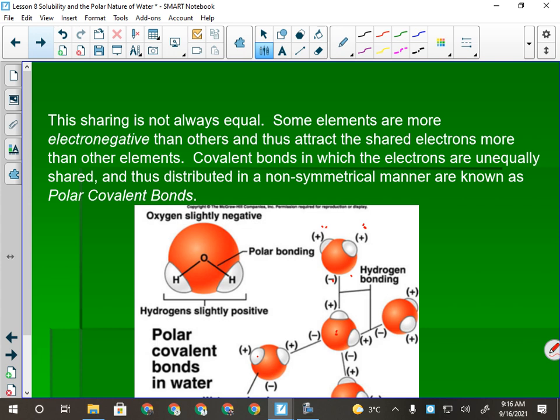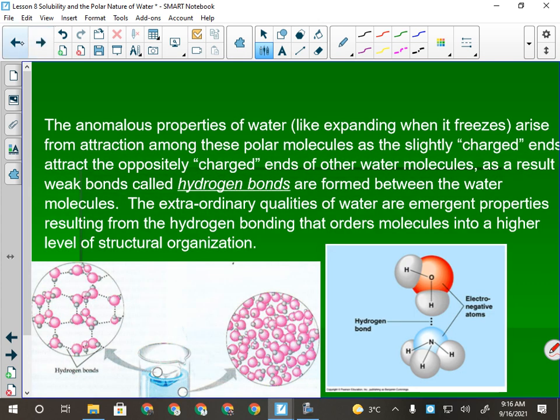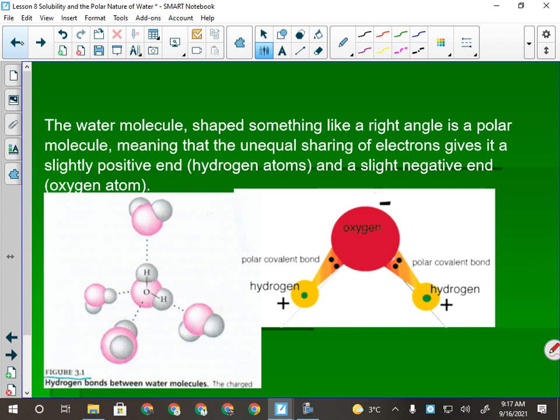Anytime you have electrons not being shared equally, you have a polar covalent bond. That's what there is between the hydrogen and the oxygen in a water molecule. Between water molecules, those are hydrogen bonds. So they're different. Polar covalent bonds, still really, really strong. Any type of covalent bond is really strong. The only difference is the polar ones, the electrons get distributed weirdly, and you end up with a positive pole and a negative pole to the molecule, which is why it's called polar.